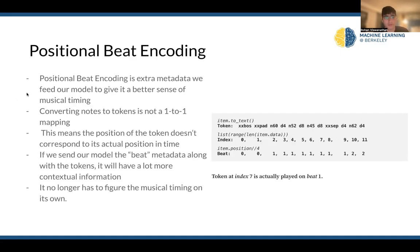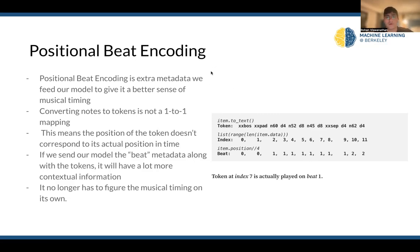The next thing to consider is positional beat encoding. We want to include some metadata to feed into our model to give it a better sense of musical timing, because the position of the token in our tokenized representation doesn't correspond to its actual position in time. For example, token seven is being played on beat one — the token at index seven is being played on beat one, and we want a way to capture that information. Converting notes to tokens isn't a one-to-one mapping. If we want to send our model the beat that our music is following, we can include this as metadata along with the actual tokens to get more contextualized information.